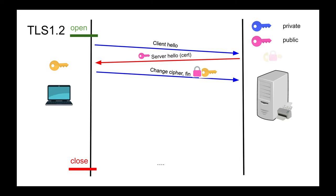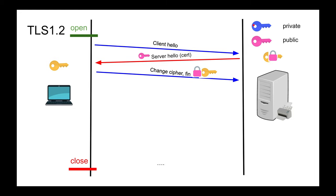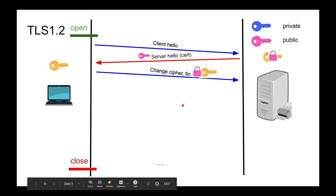Once encrypted with the server's public key, only the server can decrypt it using its corresponding private key — that's asymmetric encryption. So the symmetric key is sent encrypted. You might say: it's encrypted, why worry? Even if someone sniffed it they'd see garbage. We'll come to that.